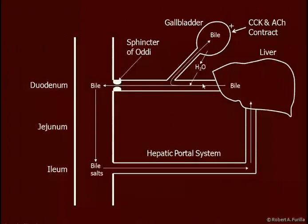We're looking at the liver here — we've created the bile, and it moves in this direction. During fasting, the sphincter of Oddi is closed, so bile backs up into the gallbladder, where we begin to concentrate it. CCK — cholecystokinin — and ACh trigger the contraction of the gallbladder. The sphincter of Oddi opens and bile is released. As food enters the duodenum, fats trigger the release of CCK, which causes the gallbladder to contract and release bile into the duodenum. That bile continues moving through the duodenum, jejunum, and ileum. It's in the distal portion of the ileum that the bile salts are recovered, then enter the hepatic portal system and return to the liver where they can be recycled.